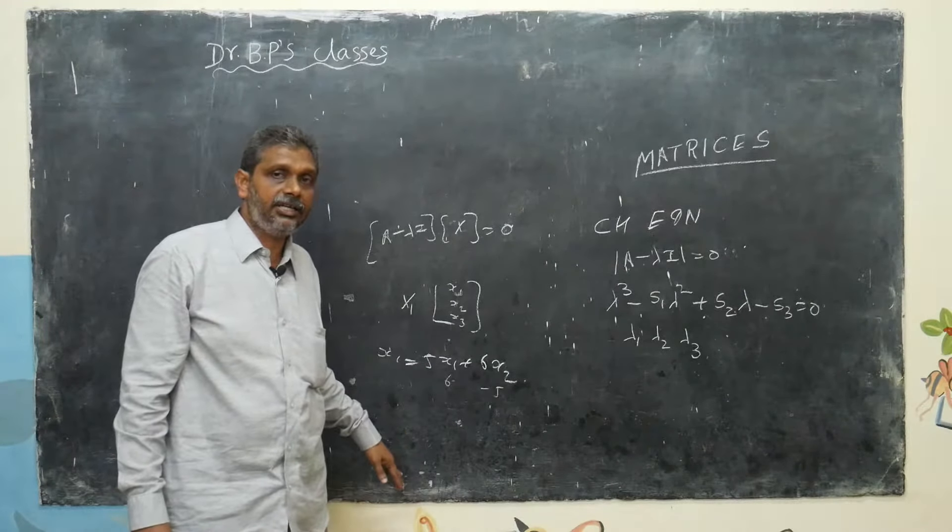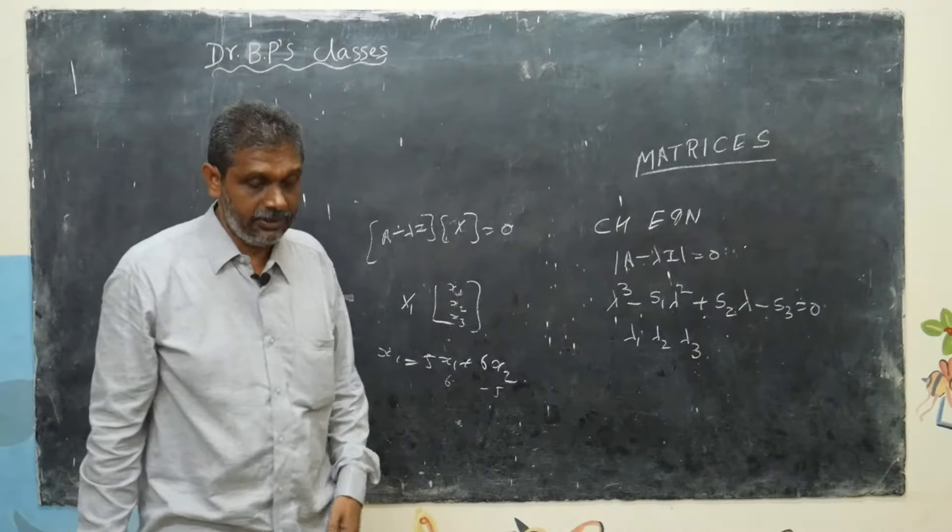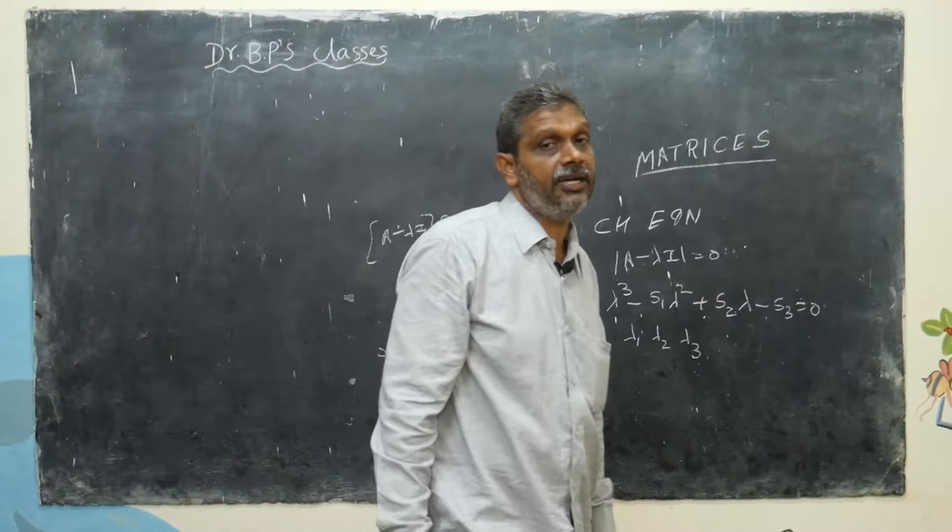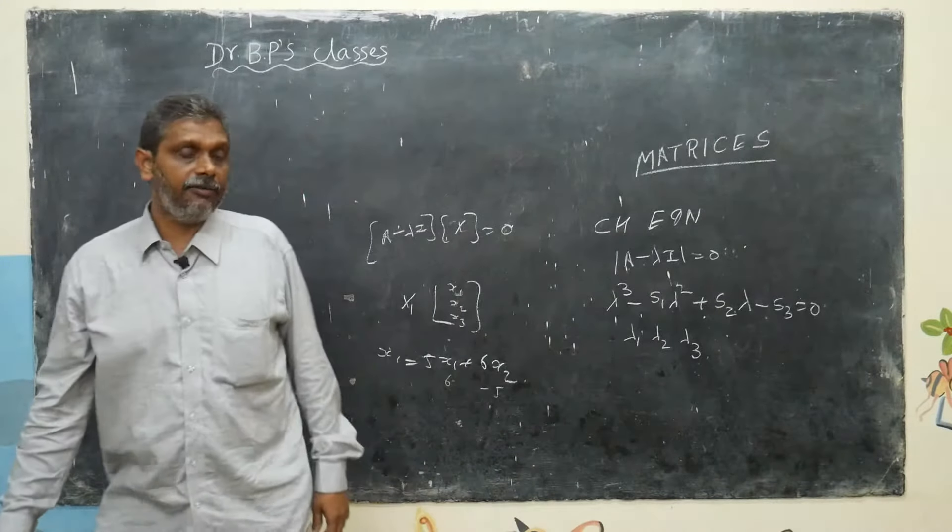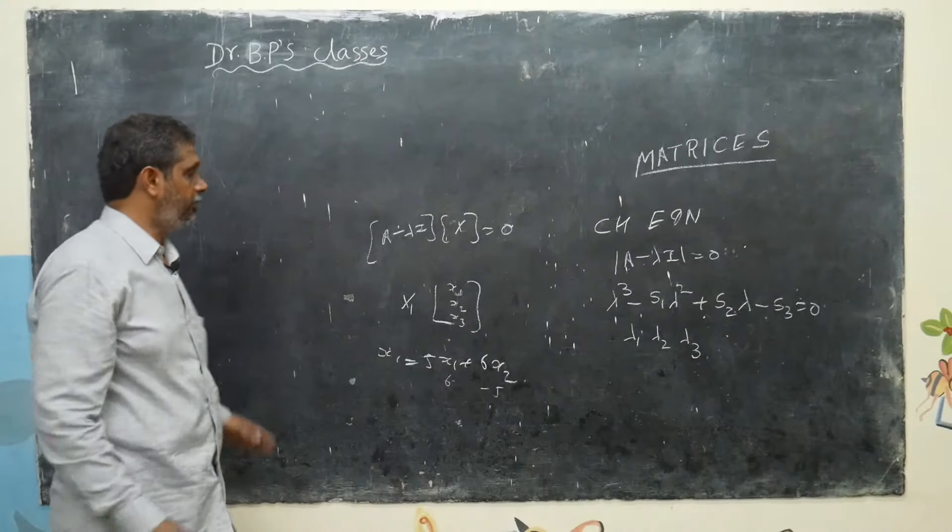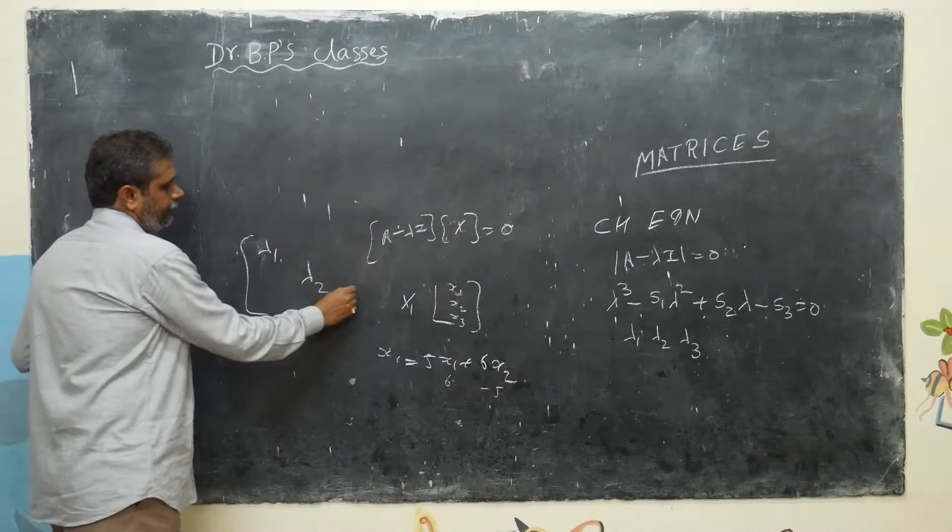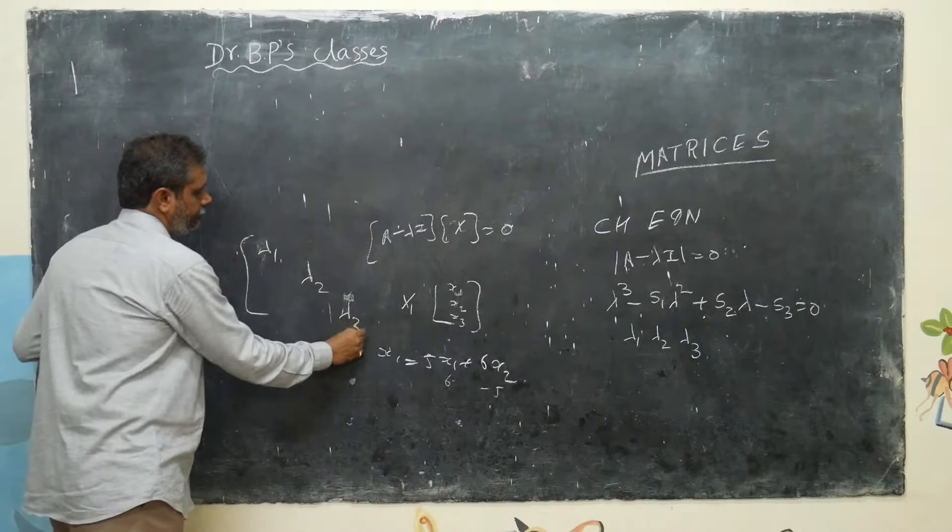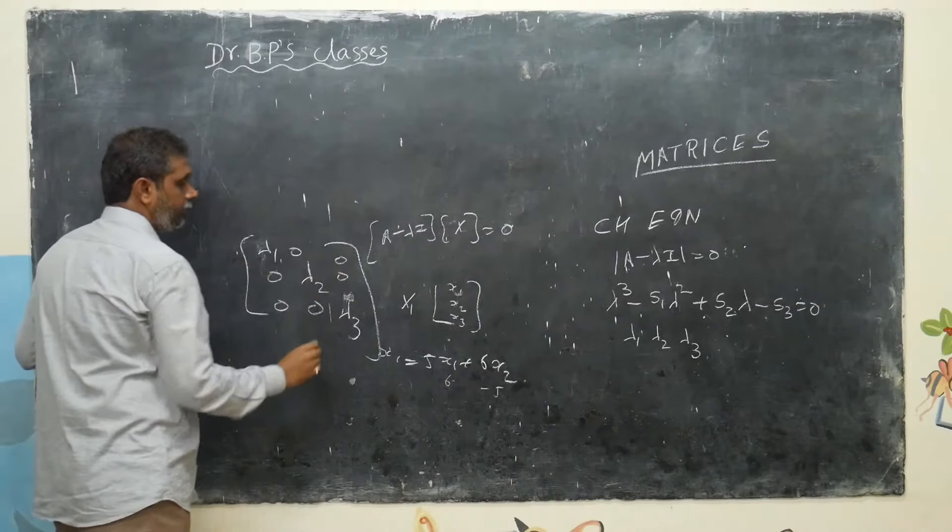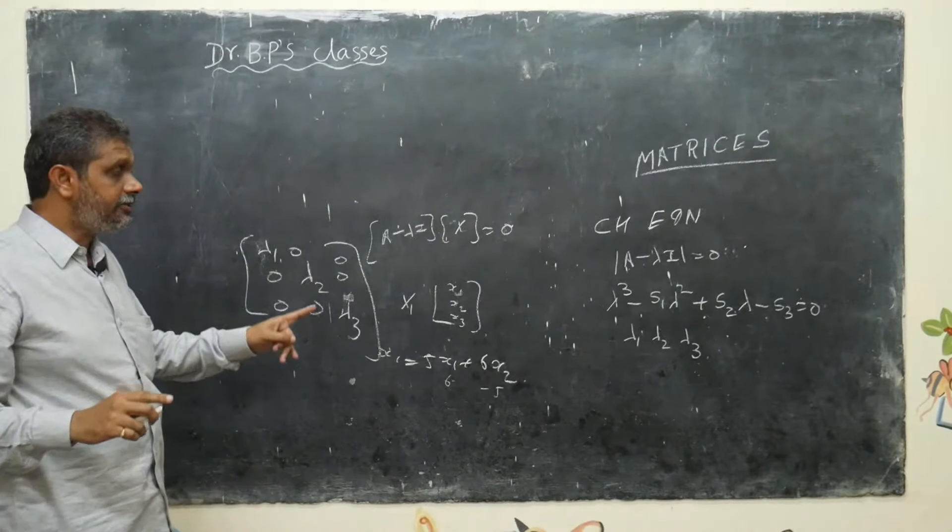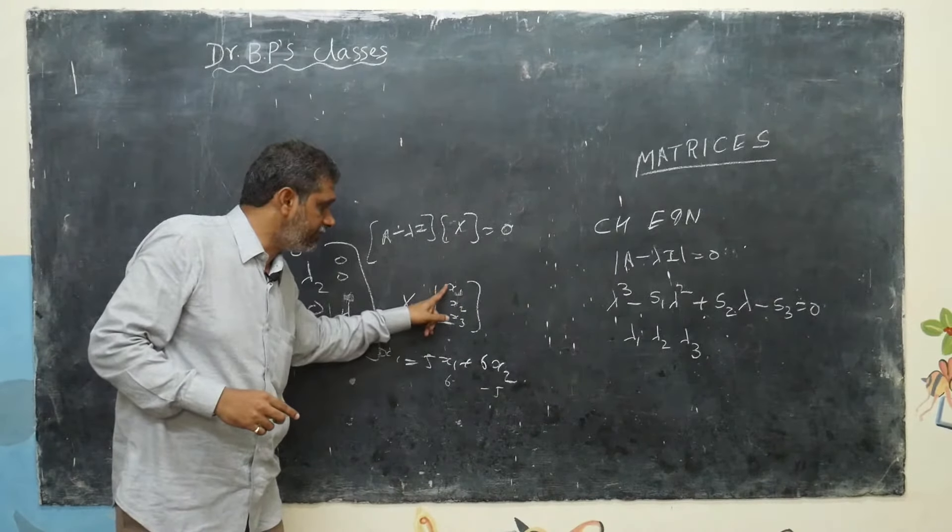Once you get the eigenvectors? This is up to eigenvectors. My problem is not completed. Once you find the eigenvector, they will ask find the diagonalization. Diagonalization matrix means what? After completing all problems, my diagonal values only will stand in matrix. This also you can see nicely. First, what value of vector for lambda 1?